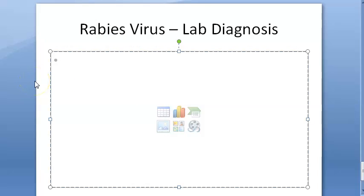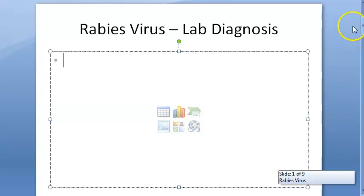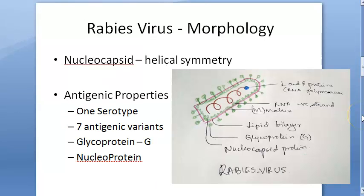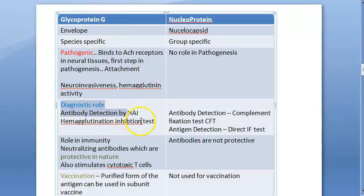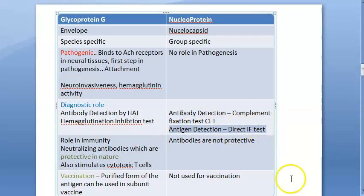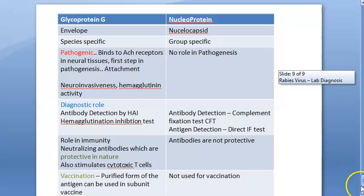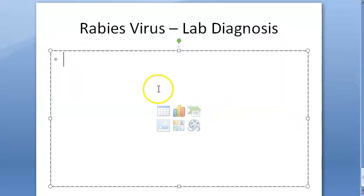Much of the lab diagnosis content has already been touched on: Negri bodies, antigens, glycoprotein's diagnostic role, hemagglutination inhibition test, nucleoprotein and complement fixation test, antibody detection, antigen detection, and direct immunofluorescence test. More details will be covered in the next video on rabies virus lab diagnosis.